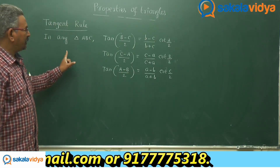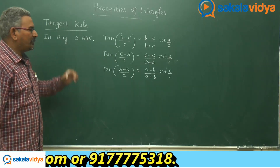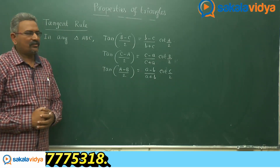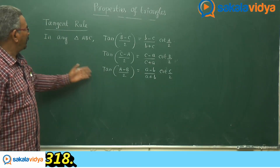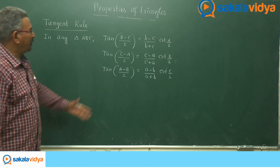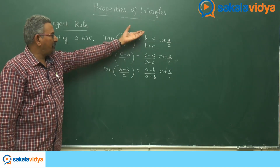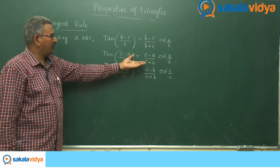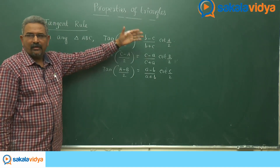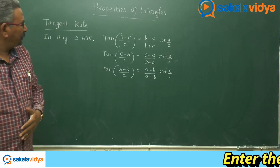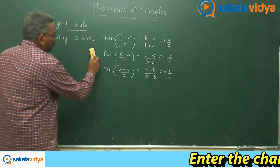This is very important and may be asked in examination. In any triangle ABC, tan of (B minus C)/2 is equal to (B minus C)/(B plus C) times cot(A/2). Let us prove this now.